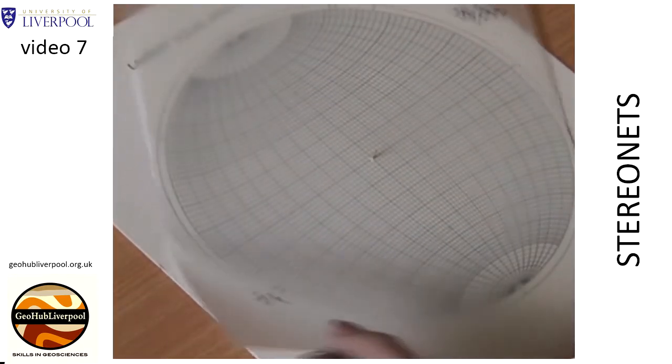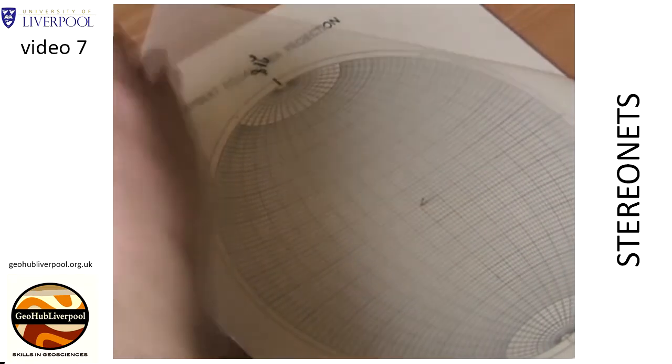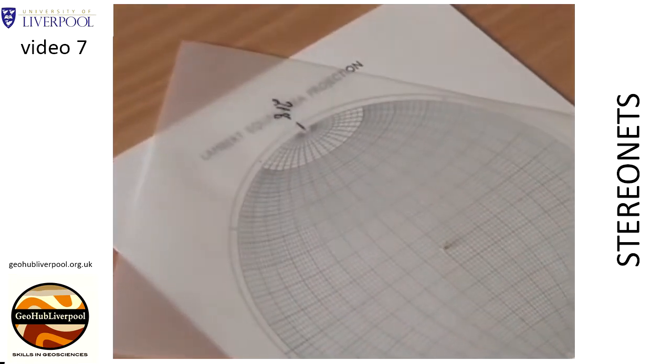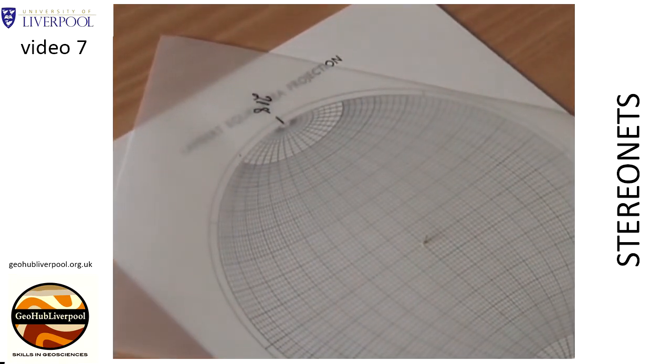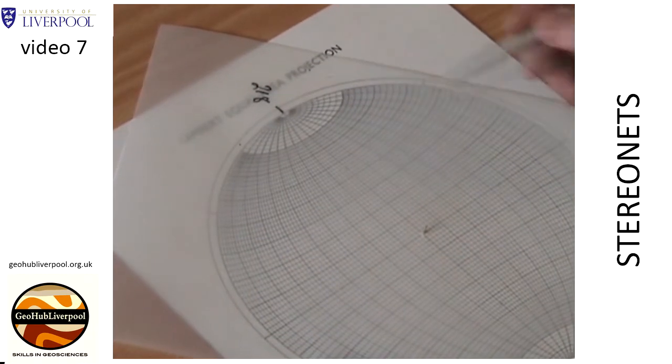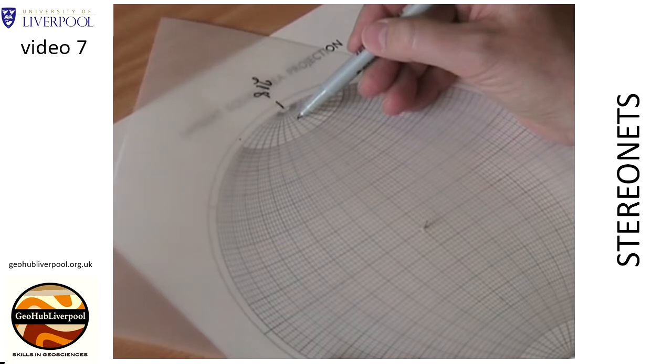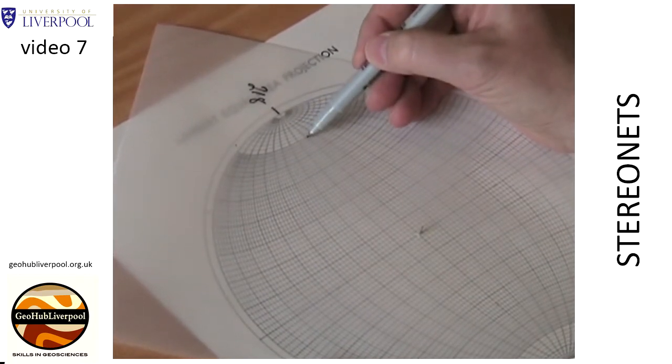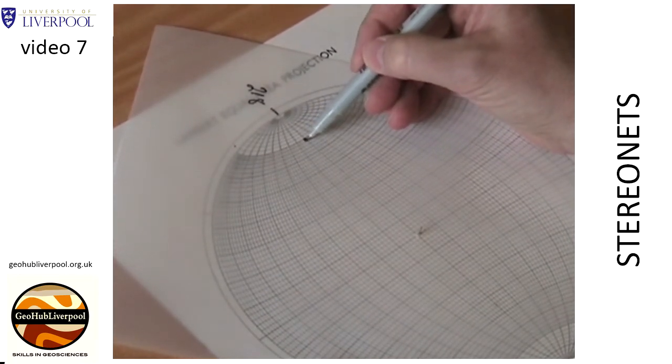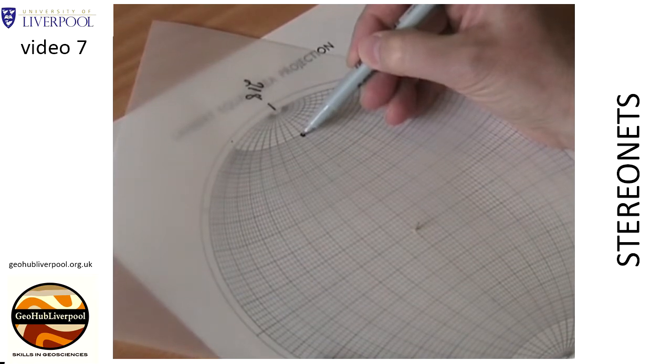Rotate the tracing paper so that this mark lies on the north pole on the stereo net. The line plunges at 21 degrees, so count the small circles from the north pole on the primitive circle and mark the point that shows a plunge of 21 degrees.